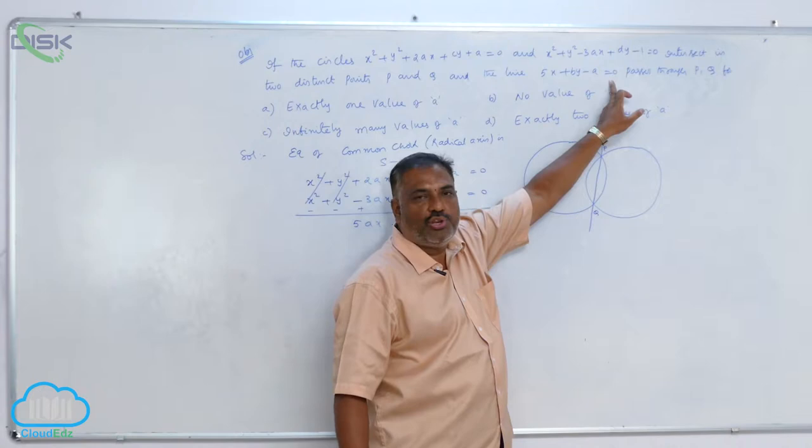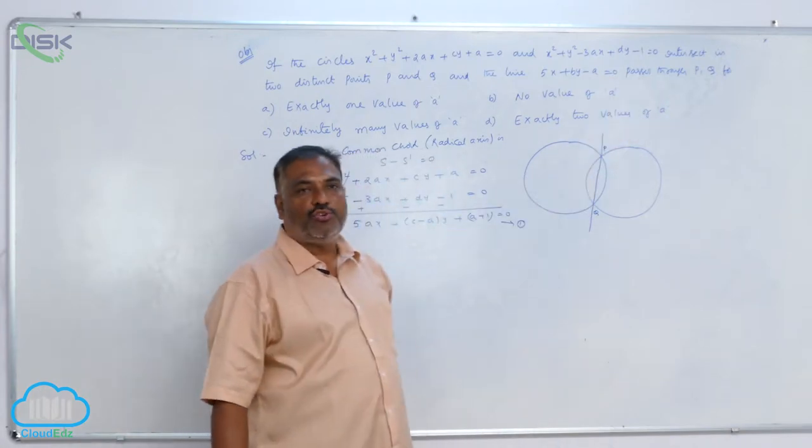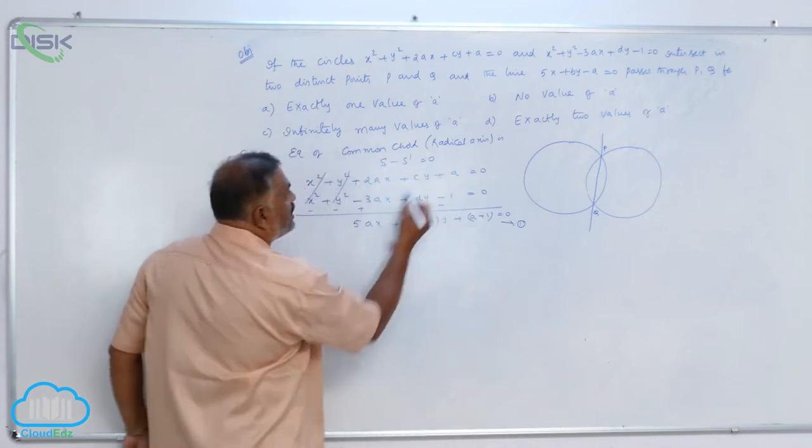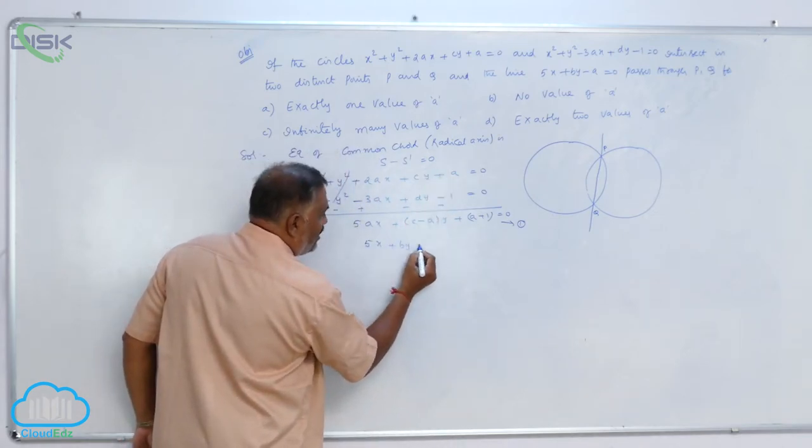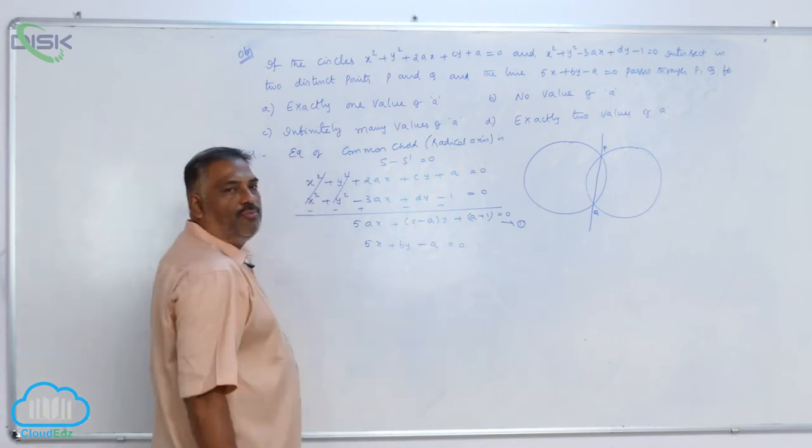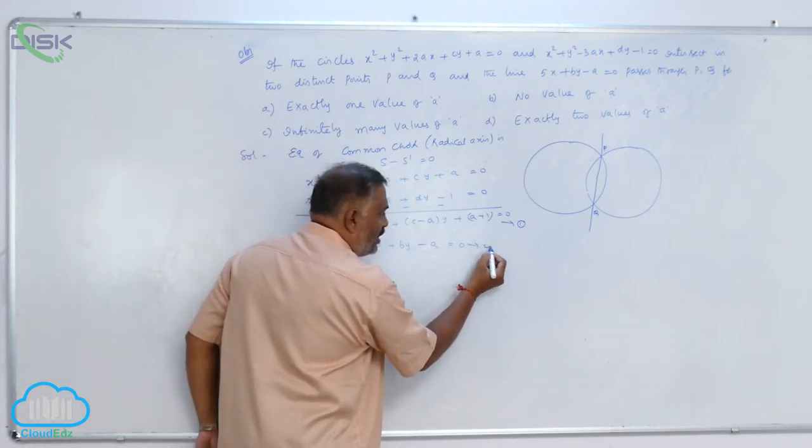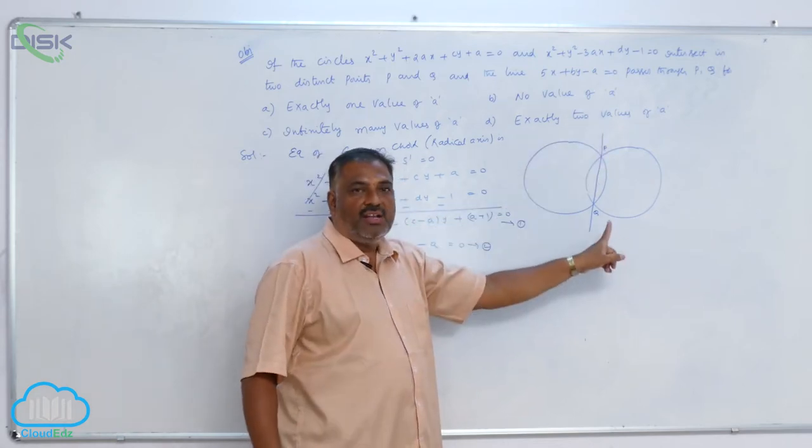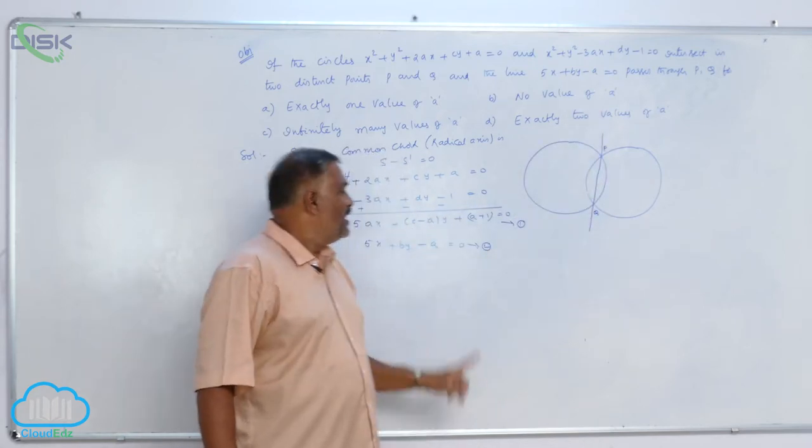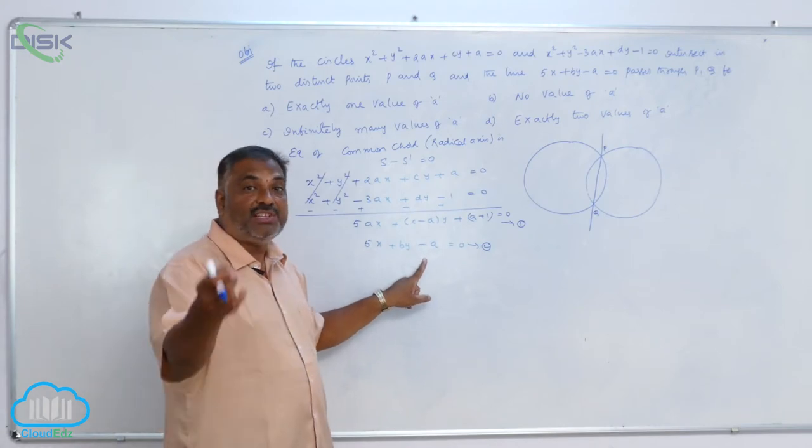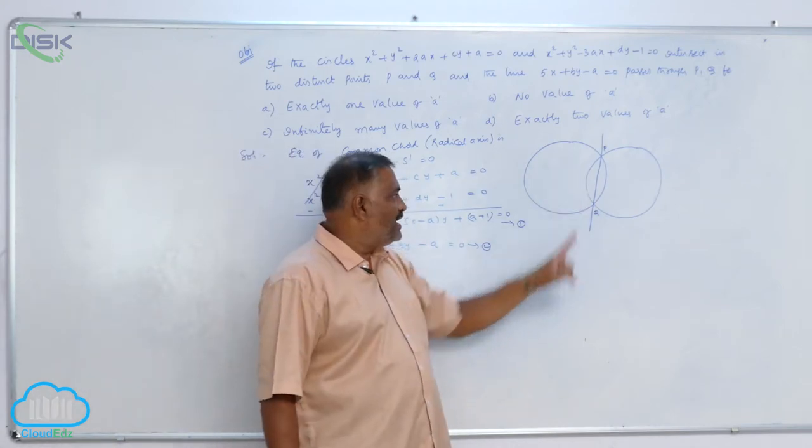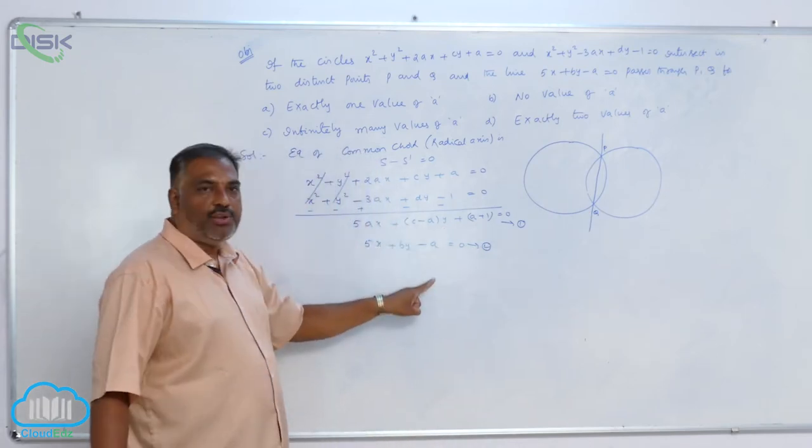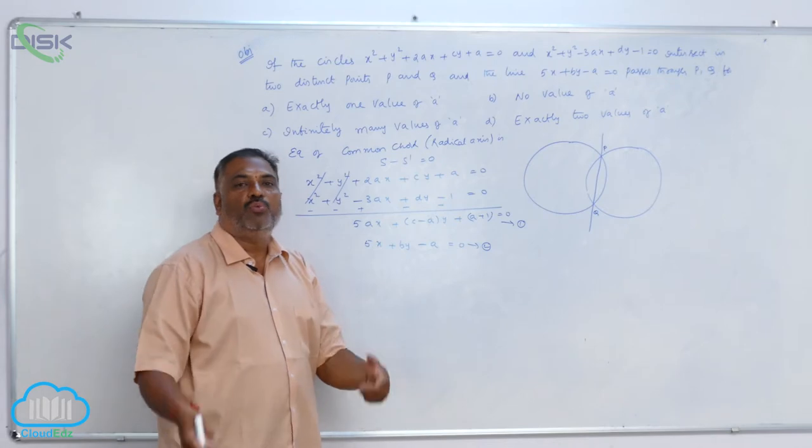He says the radical axis is cutting the circles at P, Q. And one more point: 5x plus by minus a equals zero passes through P, Q. This means the same line is given in another form. So this is 5x plus by minus a equals zero, equation two. We observe that one is the common chord intersecting the circle at P and Q; the second equation is passing through P, Q. That means the line PQ has two different forms, both one and two.